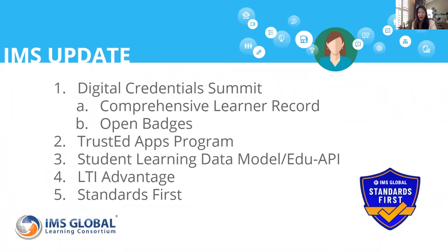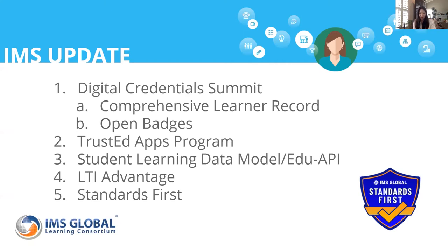What's nice is how these two standards actually work alongside a third standard called CASE — Competencies and Academic Standards Exchange. That standard allows you to structure and exchange the learning objectives and the skills frameworks. The Comprehensive Learner Record standard allows learners to own and curate their achievements around things like academic transcripts. Now we have Open Badges that can be included as credentials in a CLR and can reference the skills frameworks published in CASE, enabling interoperability all the way from K-12 to higher ed to workforce and lifelong learning pathways.